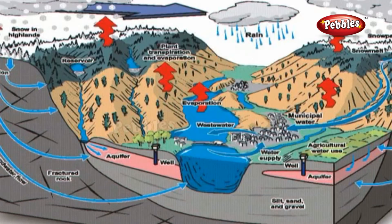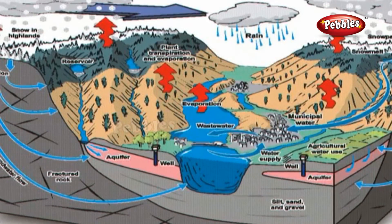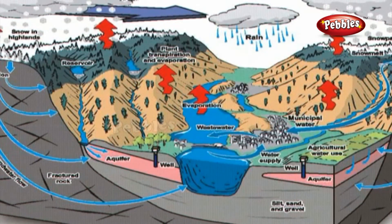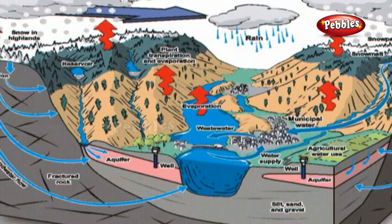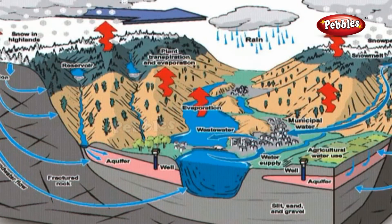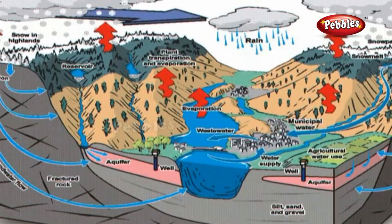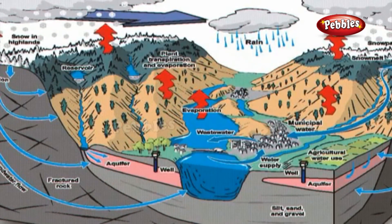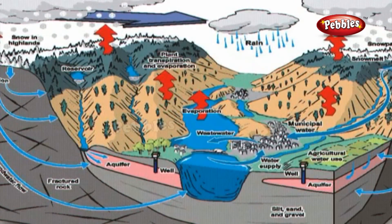As the clouds cool down, the water drops become bigger and fall down as rain. Rainwater enters the seas, rivers, lakes, ponds, and streams and evaporates again. Thus the circulation of water from the Earth's surface to the atmosphere and back to the Earth is called the water cycle.